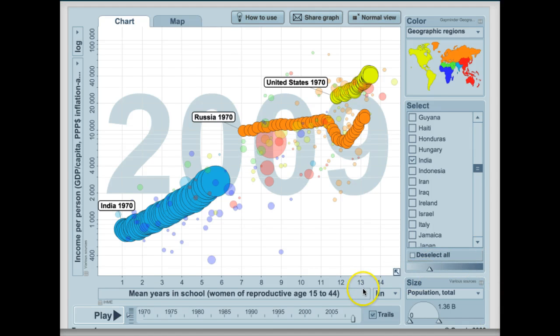Overall, we can tell that the two variables, the mean years in school for women and income per person, are dependent to each other because they correlate and they have a positive slope for the regression line.